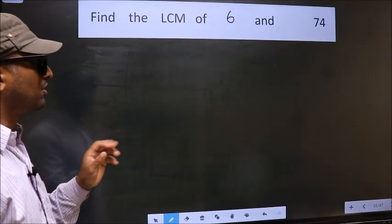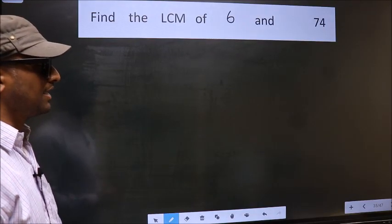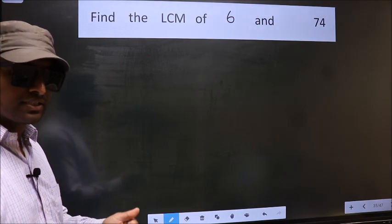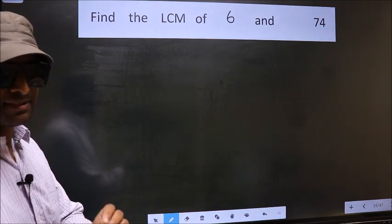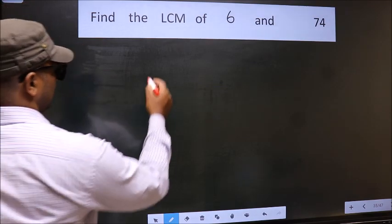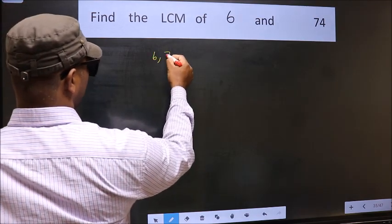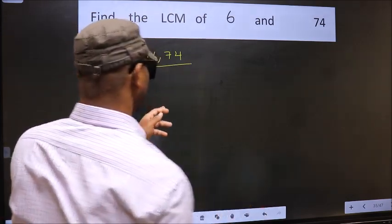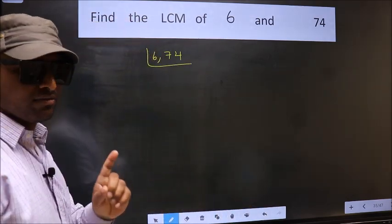Find the LCM of 6 and 74. To find the LCM, first we should frame it in this way. That is 6, 74. This is your step 1.